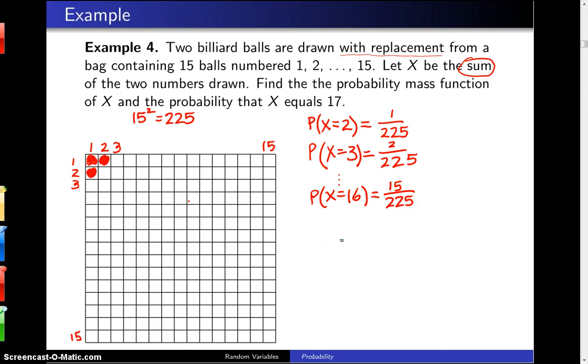But then at that point, when you go up to probability X equals 17, it starts going back down, so we've got to figure out a way to write that. And you can write that in the following fashion.